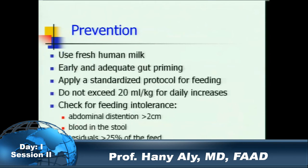Can we prevent NEC? The answer depends on which type of NEC you're talking about, making it even harder to devise a single policy. Key strategies include the use of fresh human milk, early and adequate gut priming, and applying a standardized protocol. Just having a protocol — regardless of which one — will decrease NEC. We don't exceed 20 ml per kg daily increase of feed, and we check for feeding intolerance by looking for residuals, blood in the stool, and abdominal distension.